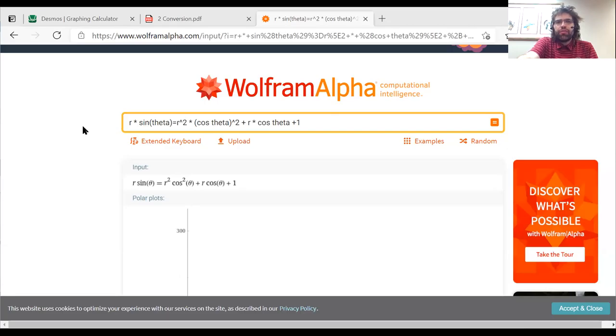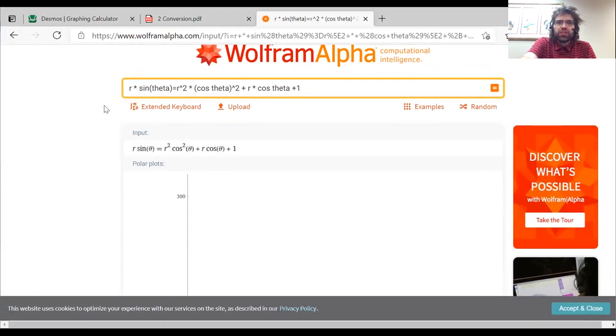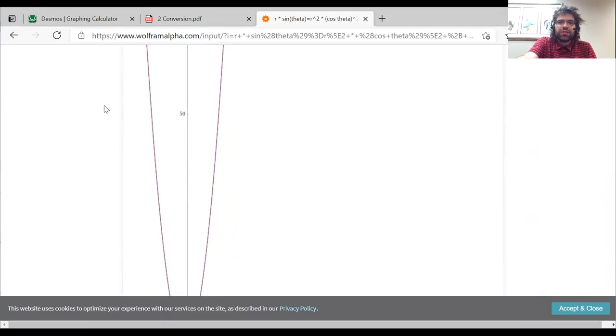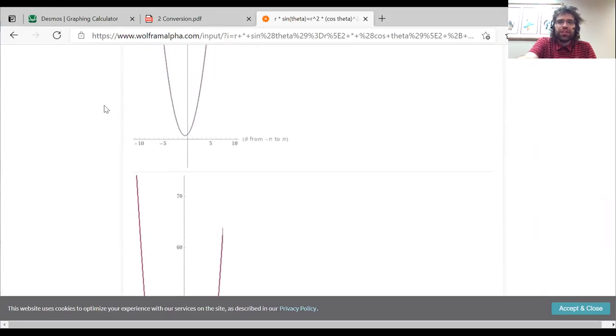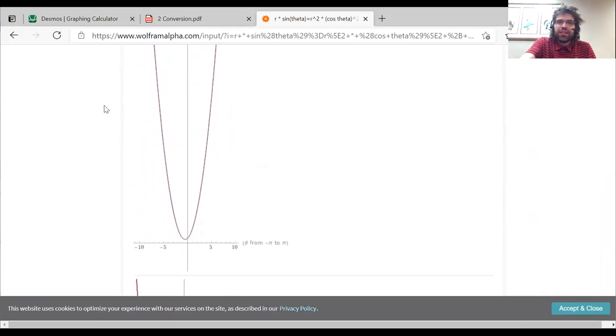Wolfram Alpha fares a little better. If we enter this into Wolfram Alpha, it at least successfully generates a graph of the thing, and it is a parabola just as it should be.